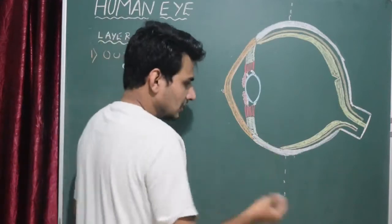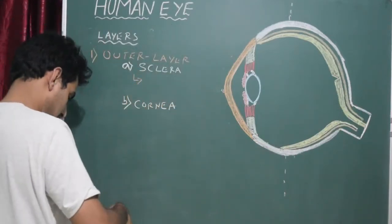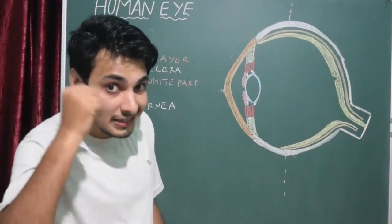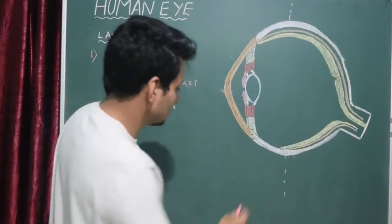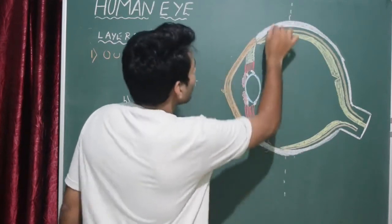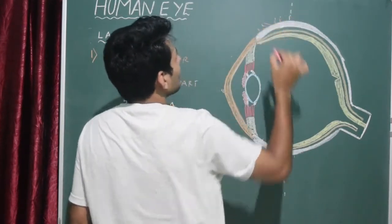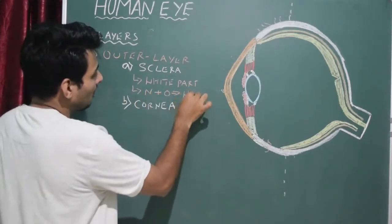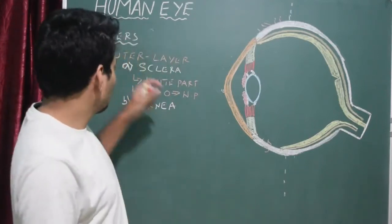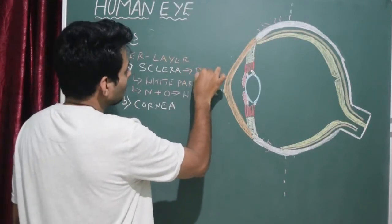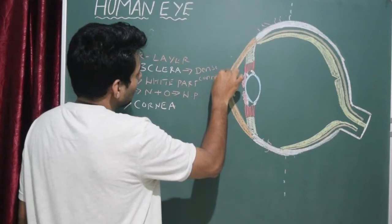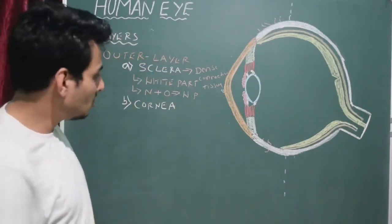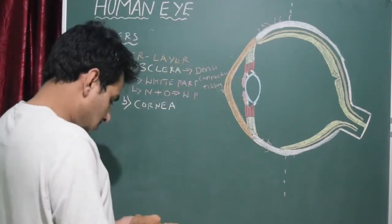The sclera is the white part of the eye and contains numerous tiny blood capillaries. These capillaries provide oxygen and nutrients to the sclera itself, not to the cornea. The sclera is made up of dense connective tissue — this is important for competitive exams. That is all about the sclera. Now we go to the second part of the outermost layer: the cornea. The cornea is devoid of blood capillaries — there are no capillaries here.